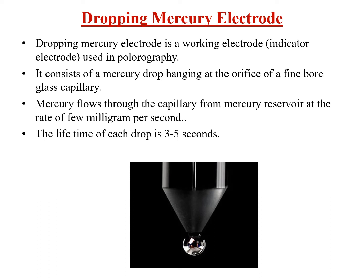Hi all, today we will be discussing about one of the electrodes used in pharmaceutical analysis — the dropping mercury electrode. This dropping mercury electrode is one of the electrodes used in the electroanalytical method known as polarography. It is a working electrode, or we can say an indicator electrode, used in polarography.